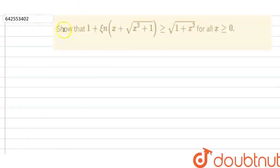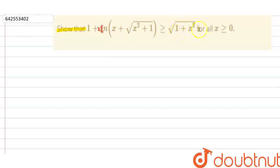Hello everyone. Our question is: show that 1 plus x·ln(x + √(x²+1)) is greater than or equal to √(1+x²), for x greater than or equal to 0.